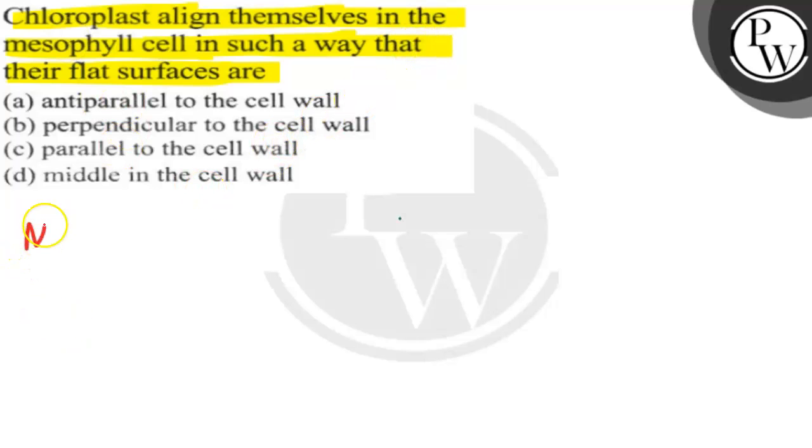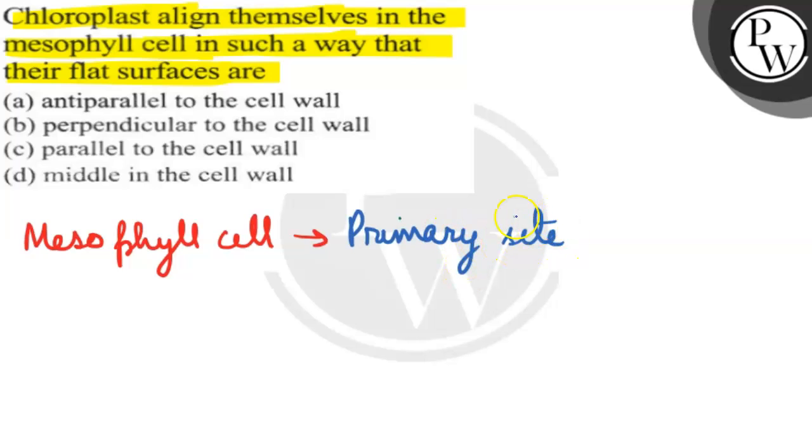We will first look at what mesophyll cells are. They are the primary site for photosynthesis. We will write here: primary site for photosynthesis.